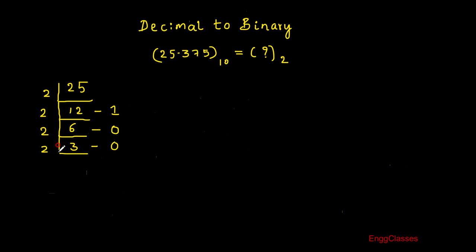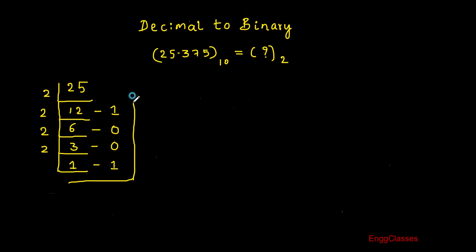Divide 3 by 2: 2 ones are 2, quotient is 1 and remainder is 1. Since I cannot divide 1 by 2, I stop the division at this point and read the remainders from bottom to top. The result is 1 1 0 0 1, which is the equivalent of 25 in binary.